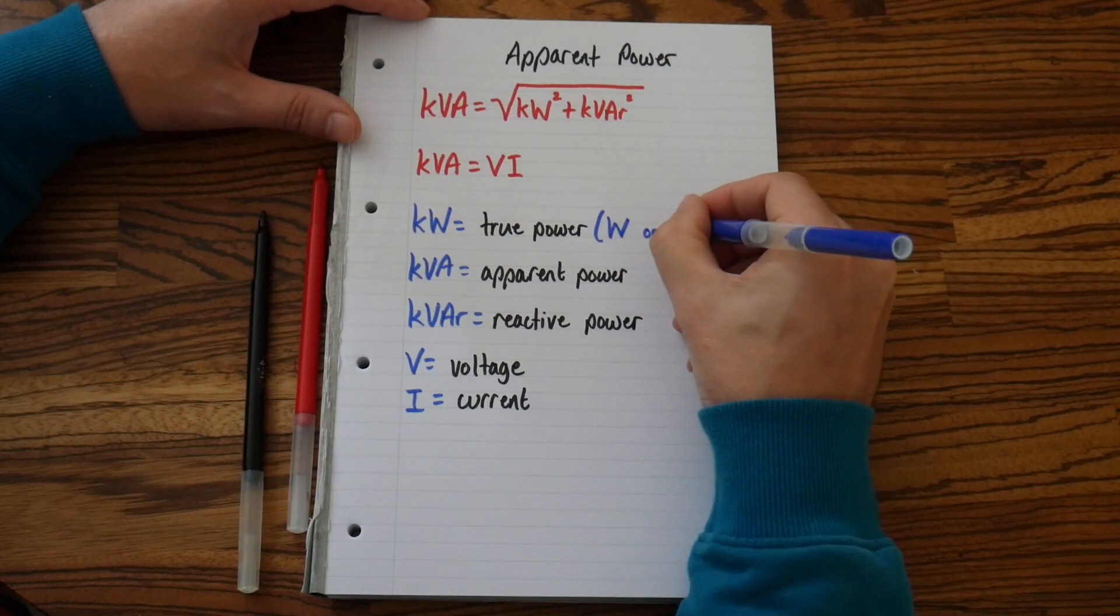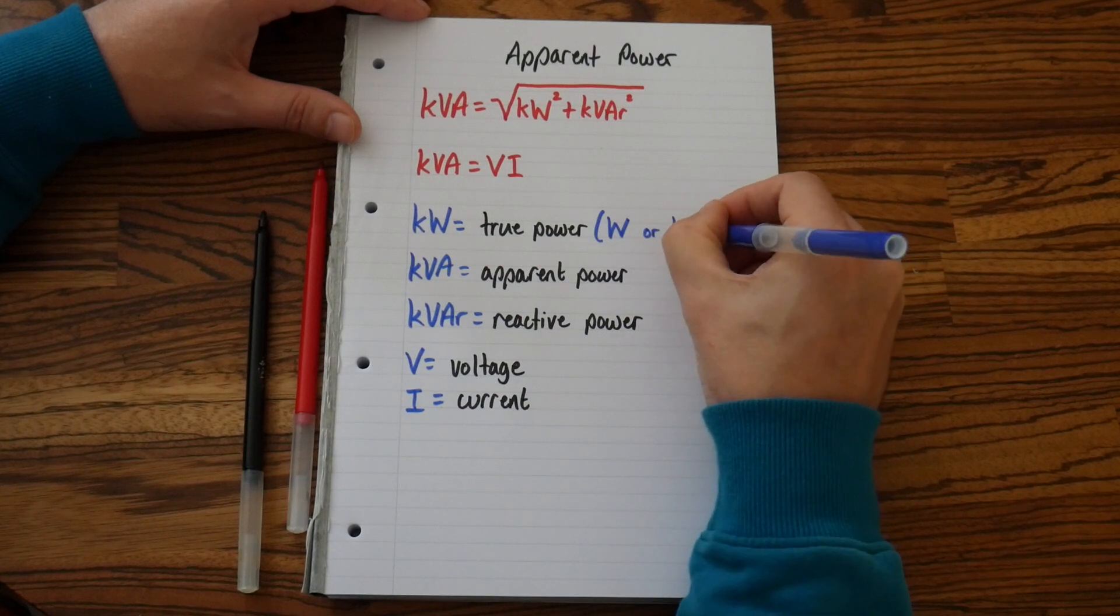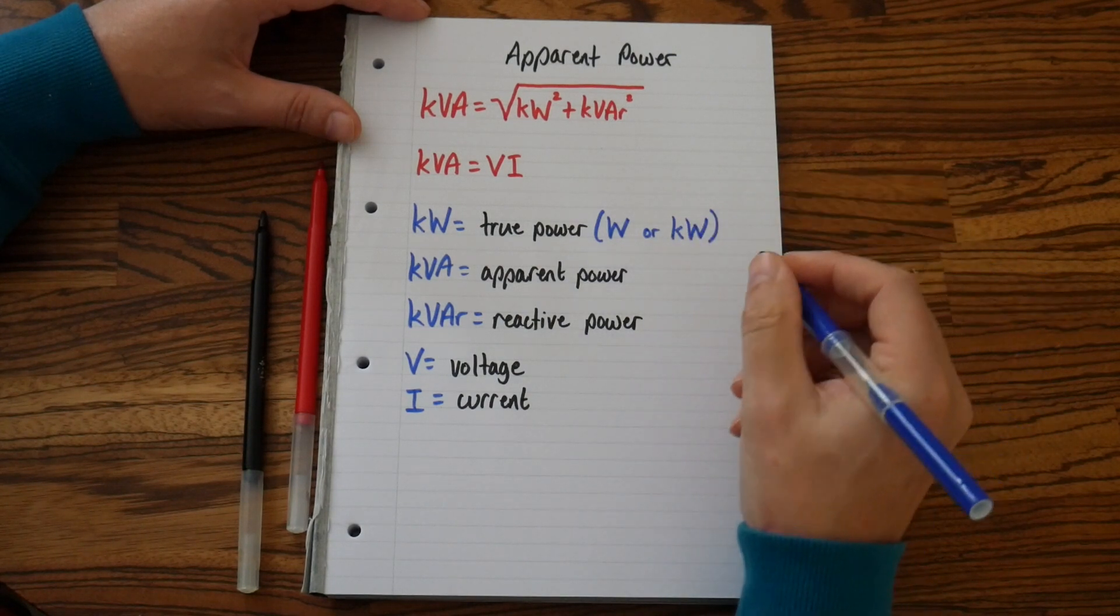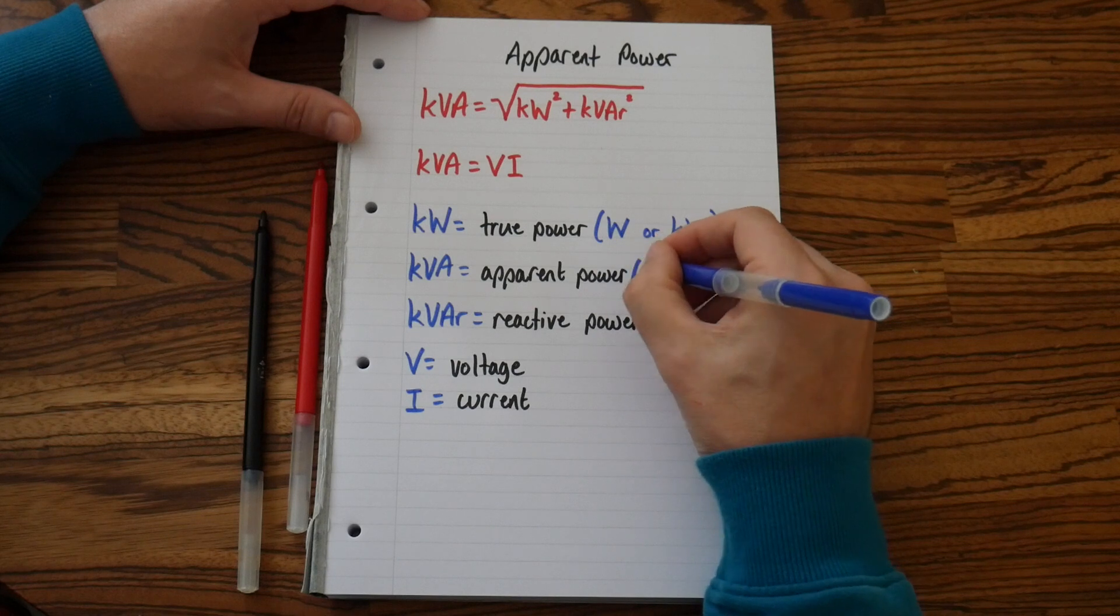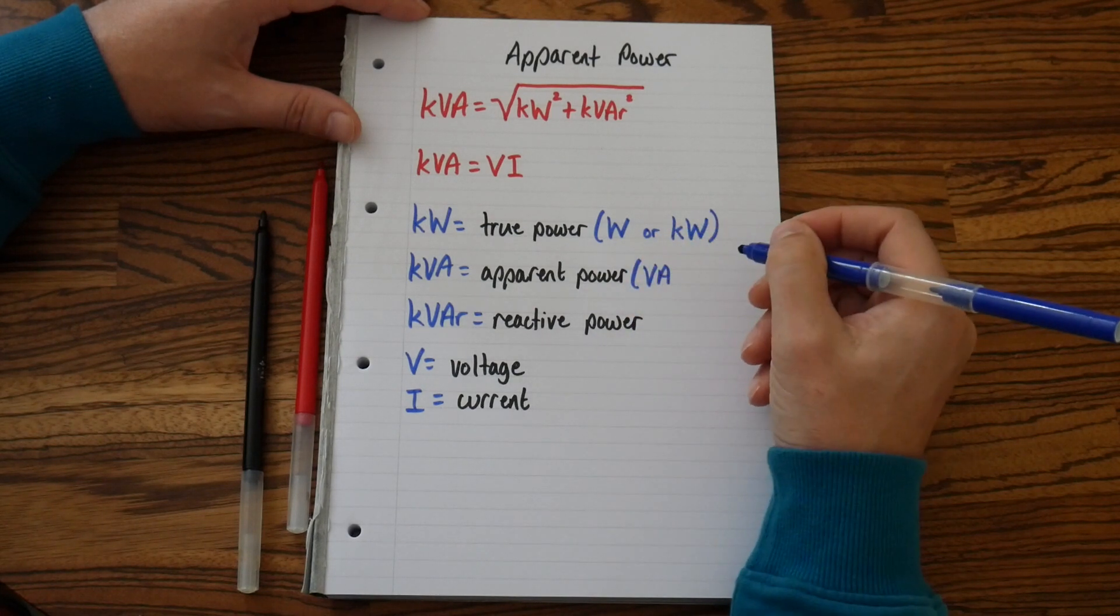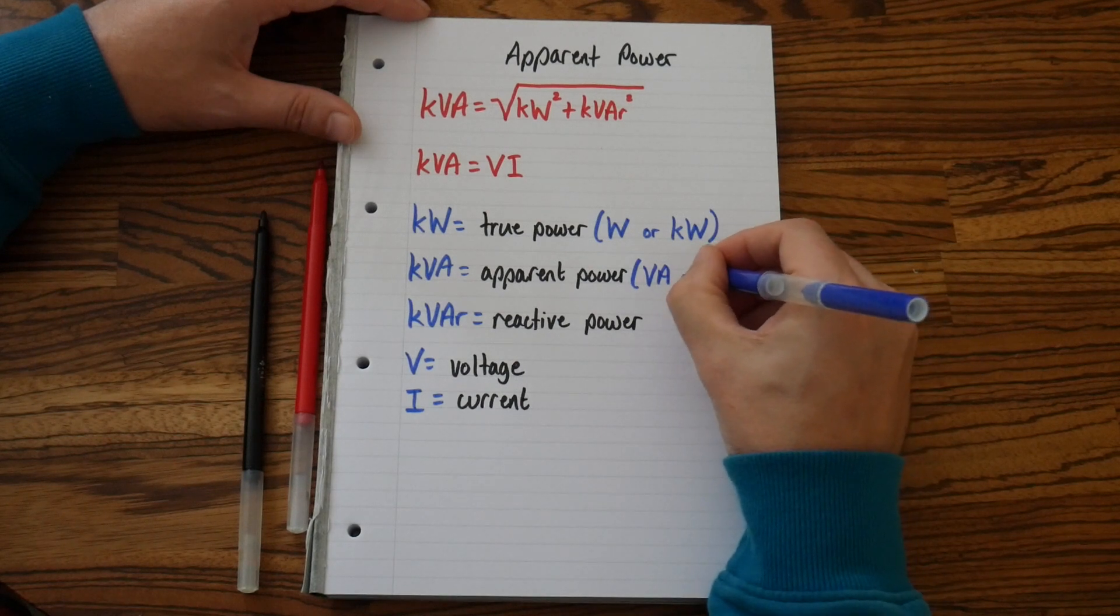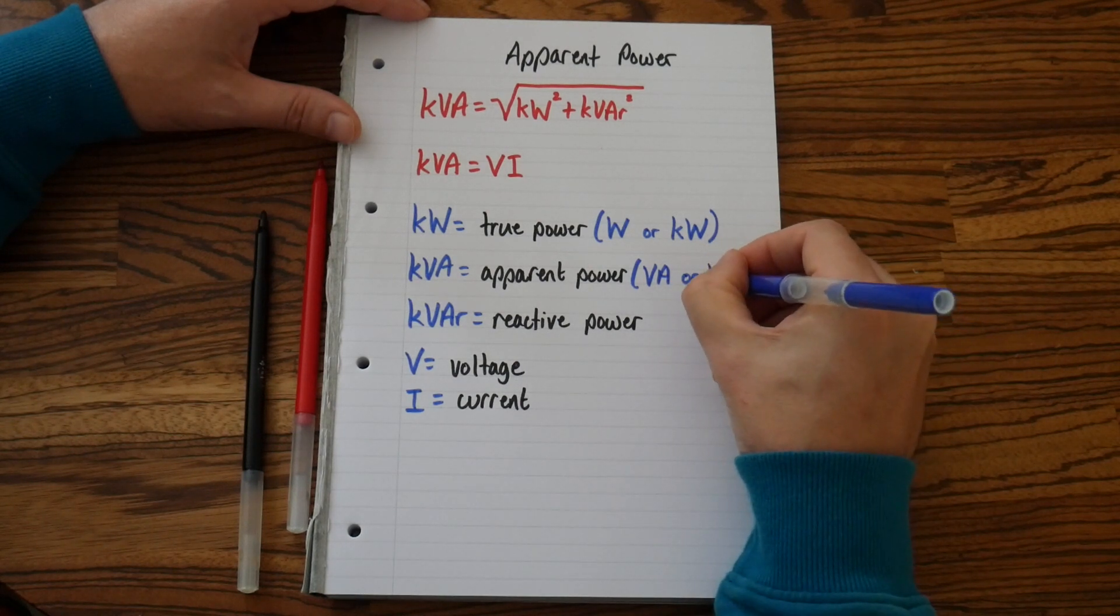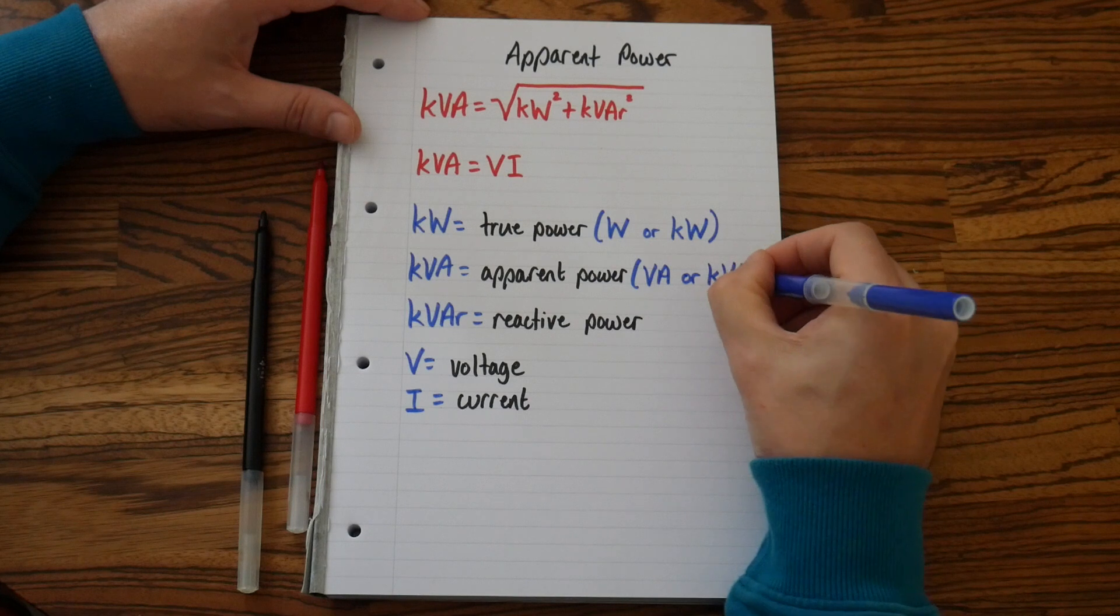The apparent power, the SI unit is VA, but because it's often a large number, we will often see kVA.